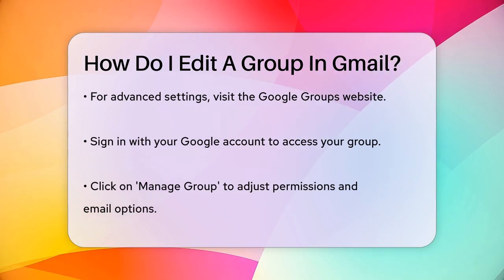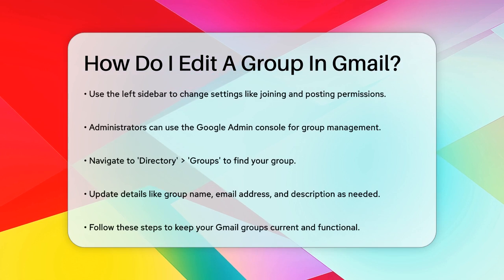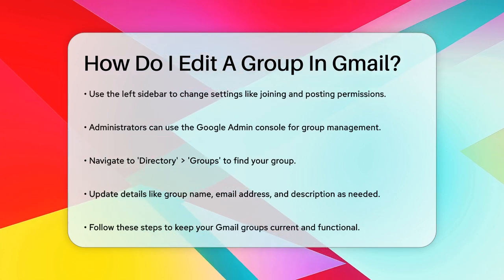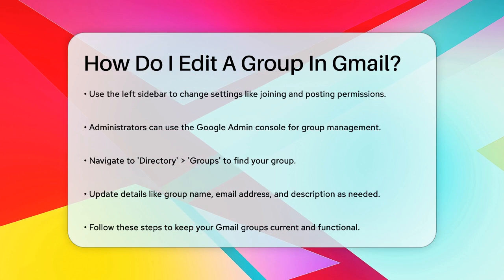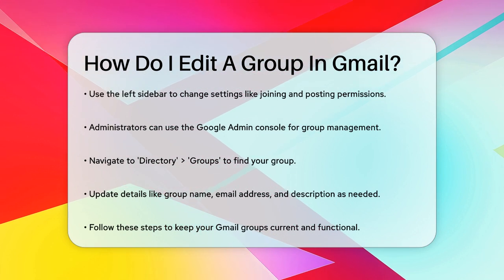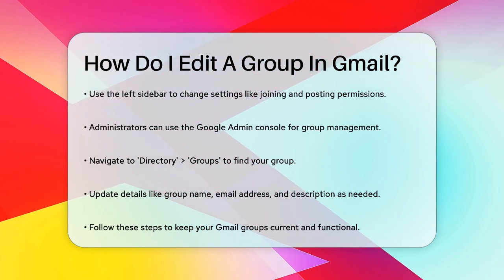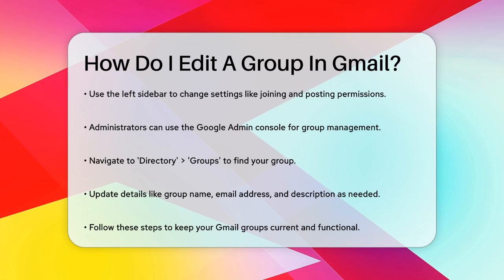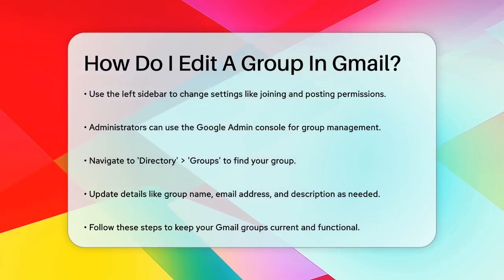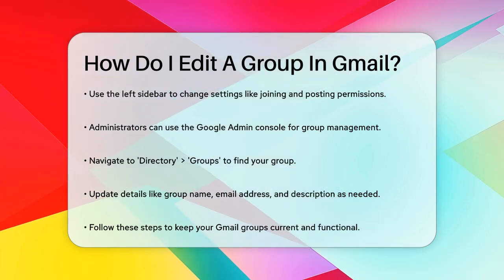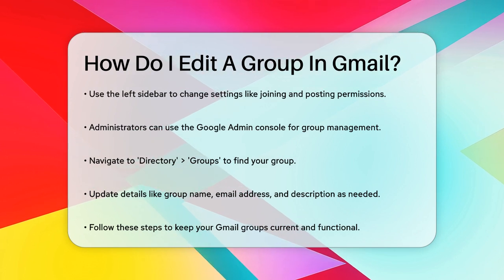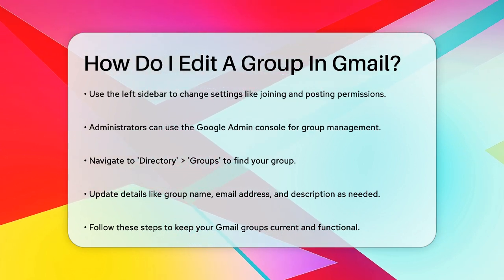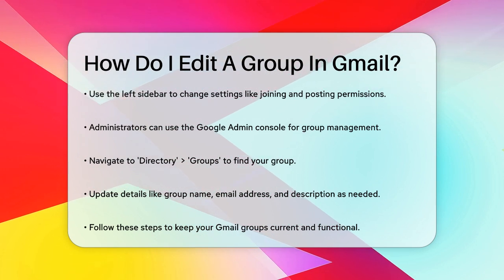If you're an administrator managing groups for an organization, you can use the Google Admin Console to update group details such as the group name, email address, and description. Simply sign in to the Admin Console, go to Directory, then Groups. Click on the group name and make the necessary changes. By following these steps, you can easily edit and manage your Gmail groups to keep them up-to-date and functional.